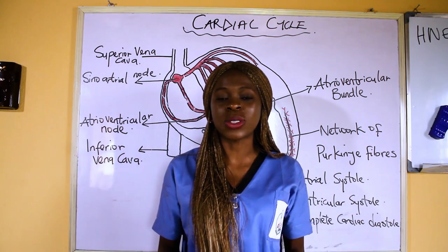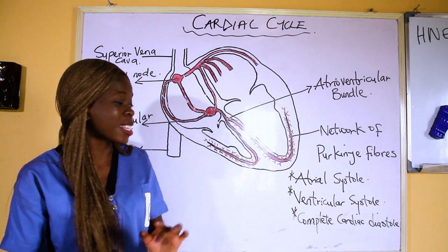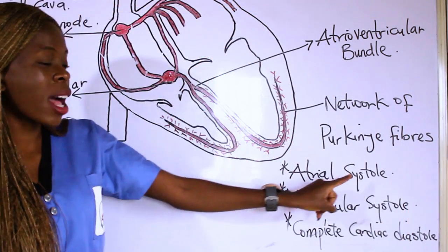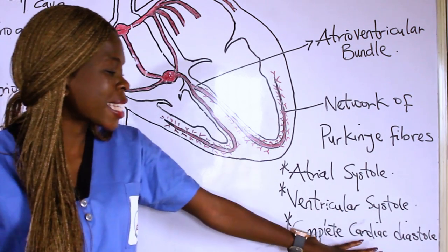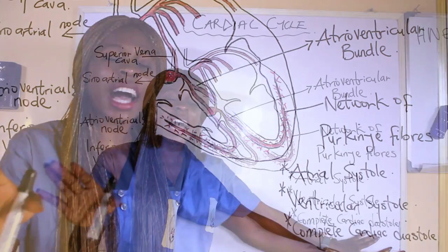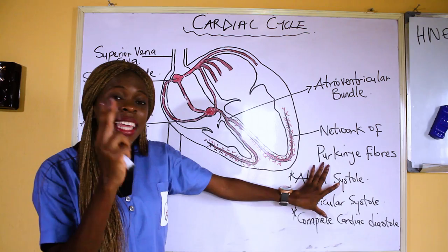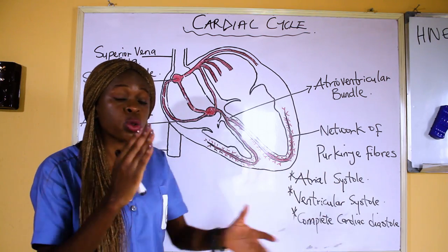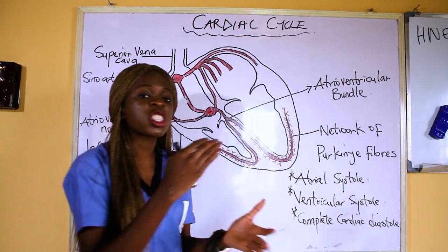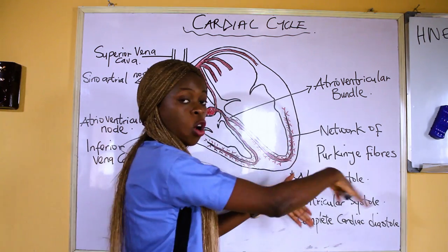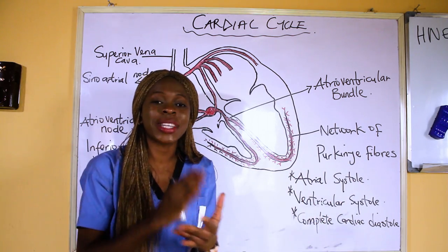This heartbeat consists of three things — three aspects: one, the atrial systole; two, the ventricular systole; and three, the complete cardiac diastole. Whenever you're asked to talk about the cardiac cycle, these are the three important things to cover. Each entire cardiac cycle takes approximately 0.8 seconds.